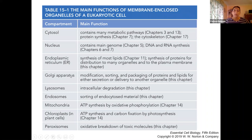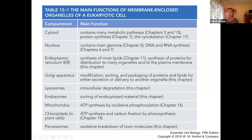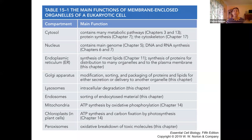In the Golgi apparatus, which is part of the transport and packaging system, proteins that were built in the endoplasmic reticulum rough ER are going to be modified, sorted, and packaged according to where they need to go. Some of the lipids synthesized also move through this system to be delivered to their appropriate site, whether to the plasma membrane or some other membrane within the cell.